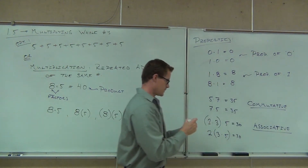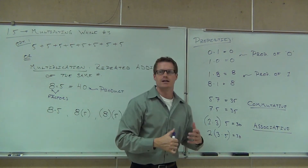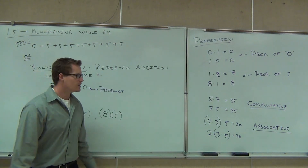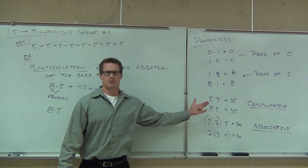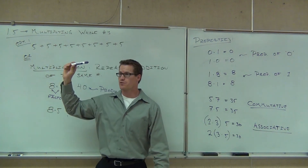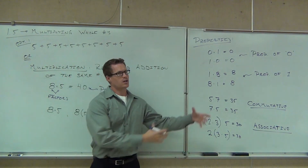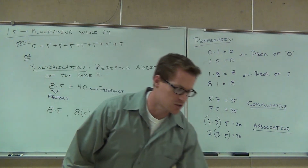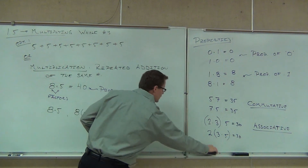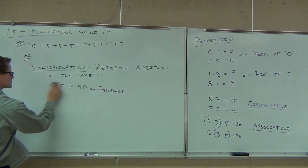You're going to find that a lot of these properties are similar to addition. Why is that? Because multiplication is repeated addition — we're just repeating these properties over and over again, and that gives us the properties for multiplication. Since multiplication is repeated addition, a lot of the properties carry over. Now there's one more that we haven't talked about in addition because it doesn't happen in addition. You're going to be using this property a lot.